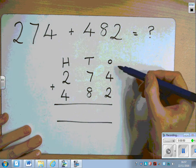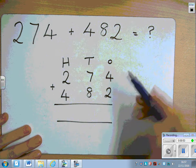Starting with the ones, we have four ones, add two ones, six ones.